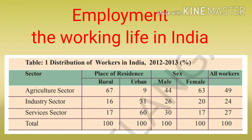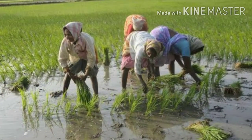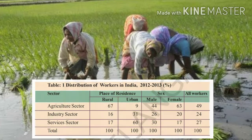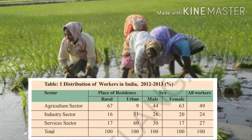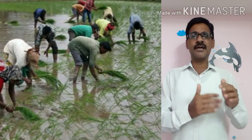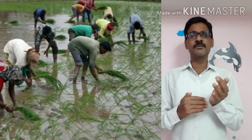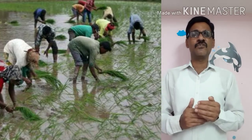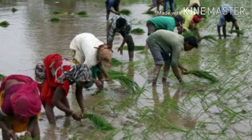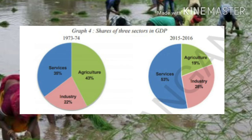Female workers get more employment in agriculture and the industrial sector compared to males. The agriculture sector continues as the major sector — even though more than half the working people work in agriculture, they contribute only one-fourth of GDP. The remaining half of working people in the secondary and service sectors contribute three-fourths of GDP.